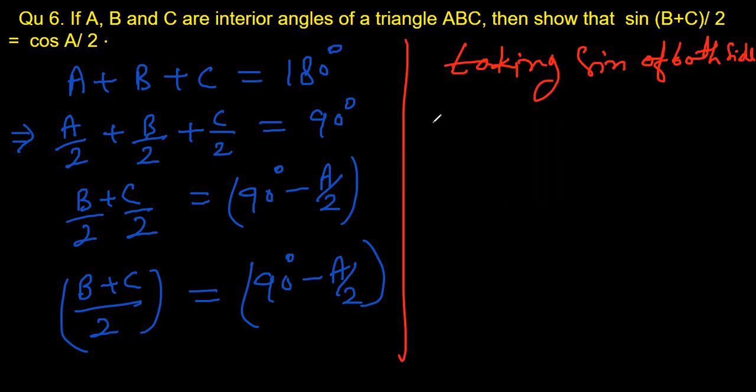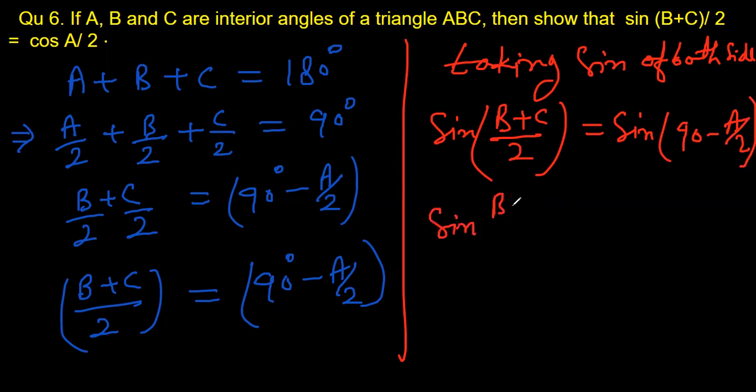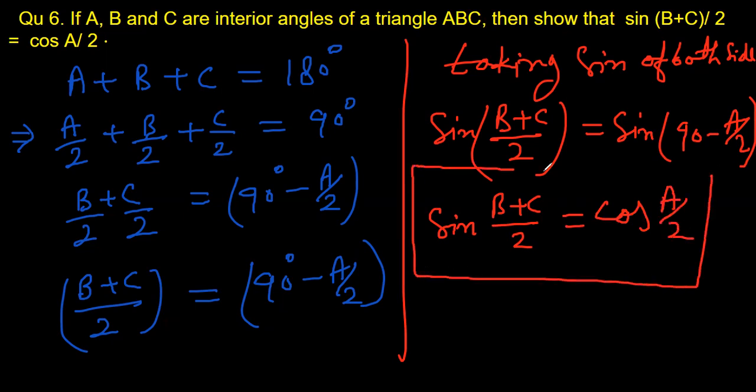So this will be sine of B plus C divided by 2. Actually B plus C by 2 is an angle. Sine of this angle is same as sine of 90 minus A by 2. And this means sine of B plus C by 2 is equal to sine 90 minus theta is cos theta. And in place of theta, you have A by 2. And we have proved what we are asked to show. We are asked to show that sine of B plus C by 2 is equal to cos A by 2. And this is proved.